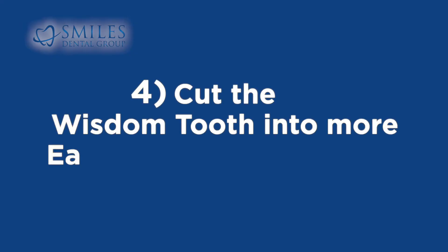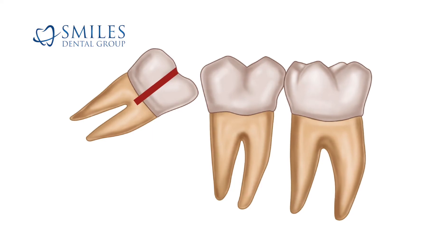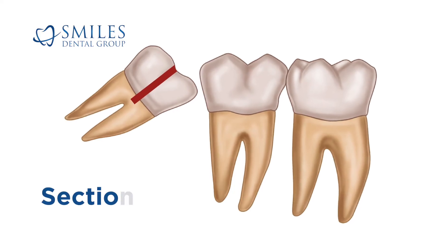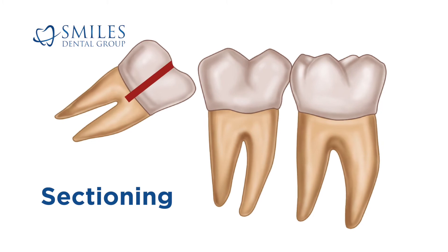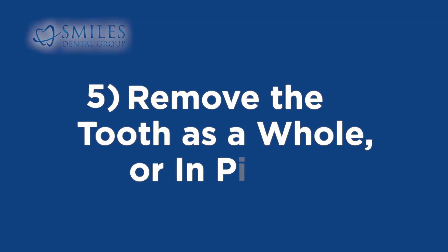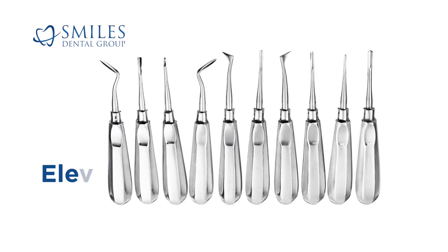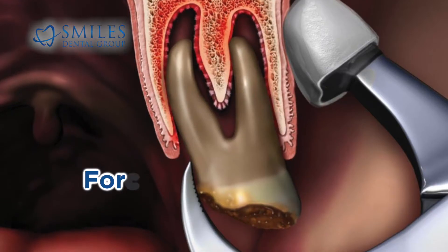4. Cut the wisdom tooth into more easily manageable pieces. This is commonly known as sectioning. 5. Remove the tooth as a whole or in pieces using instruments called elevators and forceps.